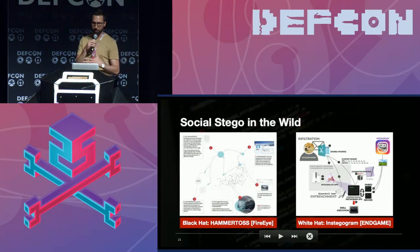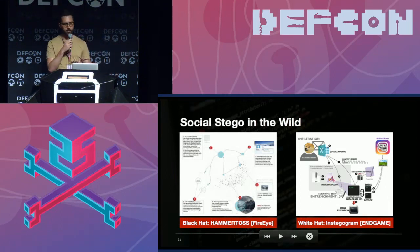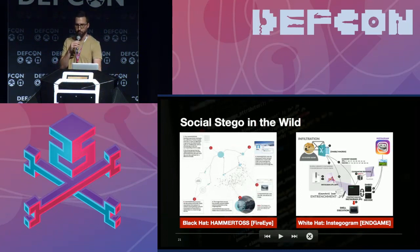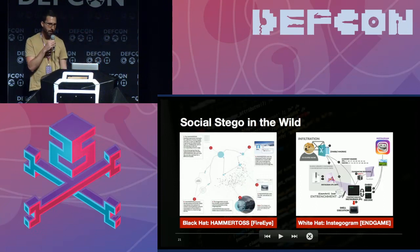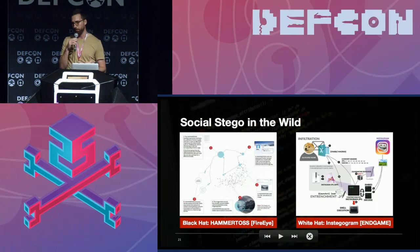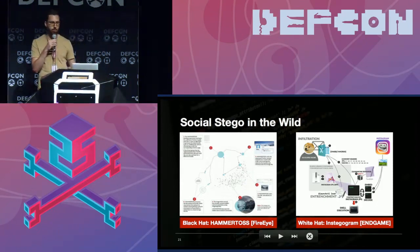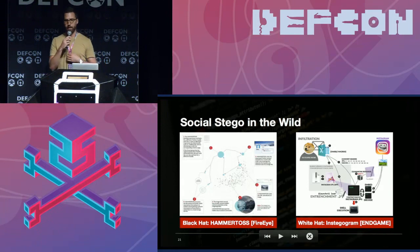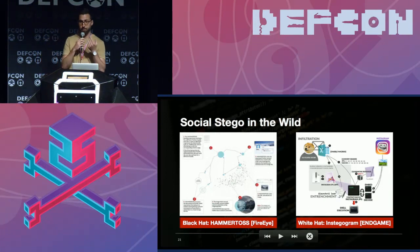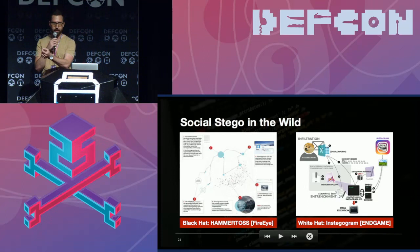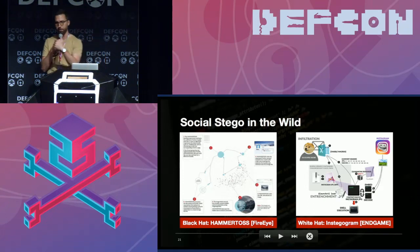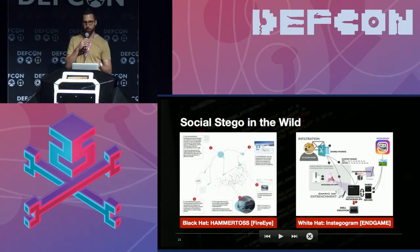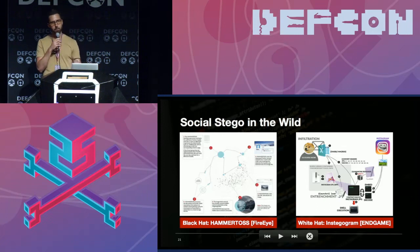HammerToss was allegedly the Russian APT 29 group. Once the malware was installed locally, it would look for different social network users on Twitter. If the user existed, it would look for a hashtag and a URL associated with their last post. At that URL would be a link to typically a GitHub page containing an image — and within that image was steganography. So you have all these layers of obfuscation being employed by the attacker just to retain command and control and communicate with infected machines.